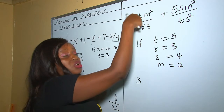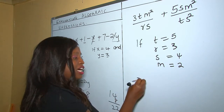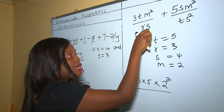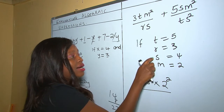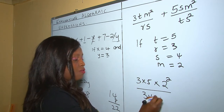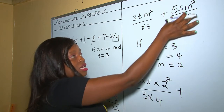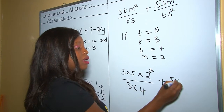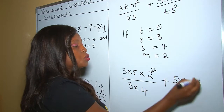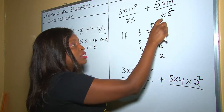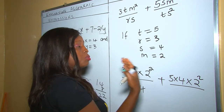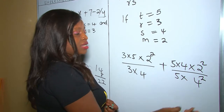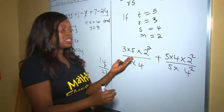So it shall be 3, our t is 5, times m — and the value of m is 2, so 2 squared — all these divided by rs, where r is 3 and s is 4. Plus, replacing the letters in the second term: 5 times s (which is 4) times m squared (which is 2 squared), all divided by ts², where t is 5 and s is 4, which is being squared.